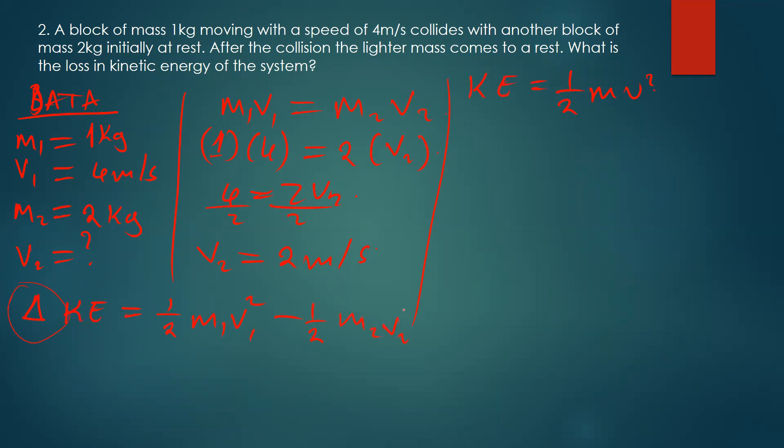When you do the subtraction, we'll get: m1 is 1, v1 is 4. Then we say minus half—m2 is 2, v2 we found to be 2, we square that.